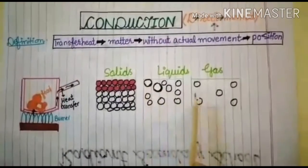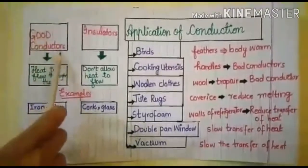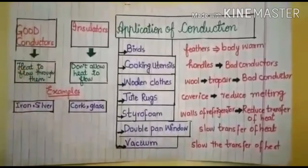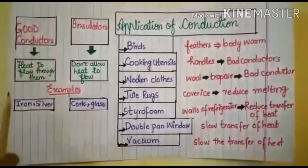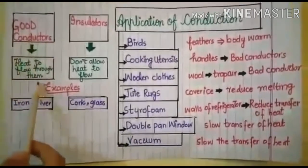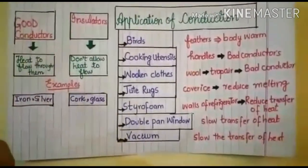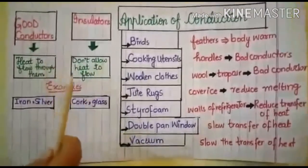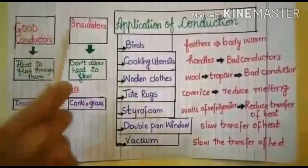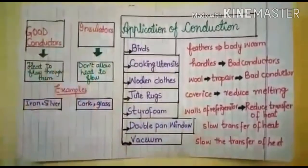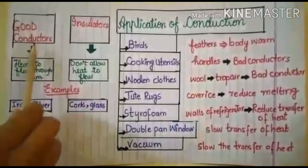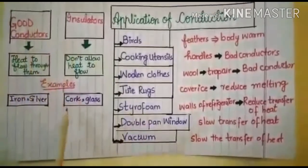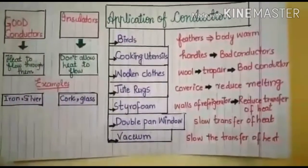Conduction is more prominent in solids because in solids the molecules are tightly packed, whereas in liquids and gases the molecules are far apart from each other. Good conductors are materials that allow heat to flow through them easily. Iron and silver are examples of good conductors, whereas insulators include materials like coat and clasp.